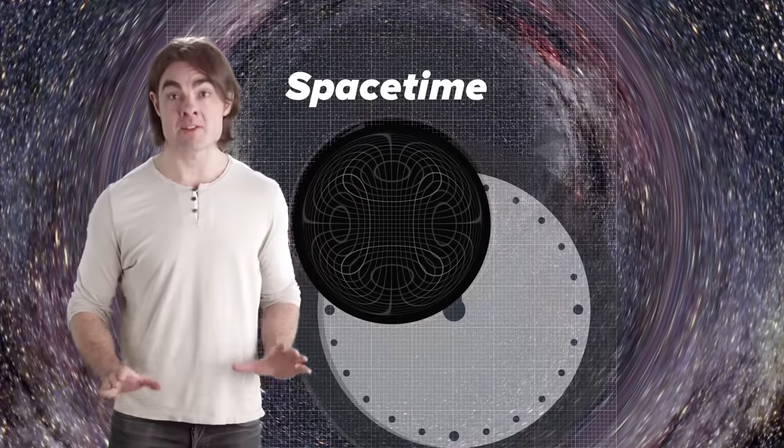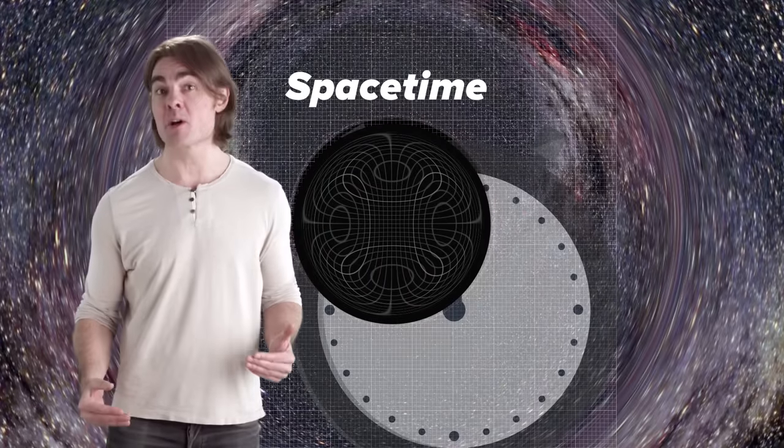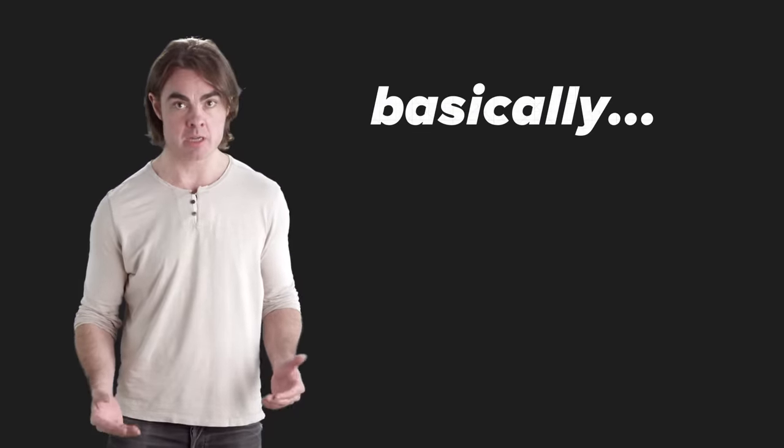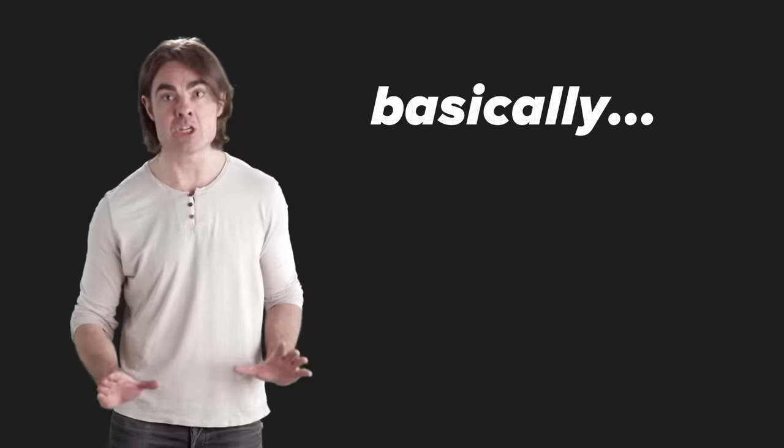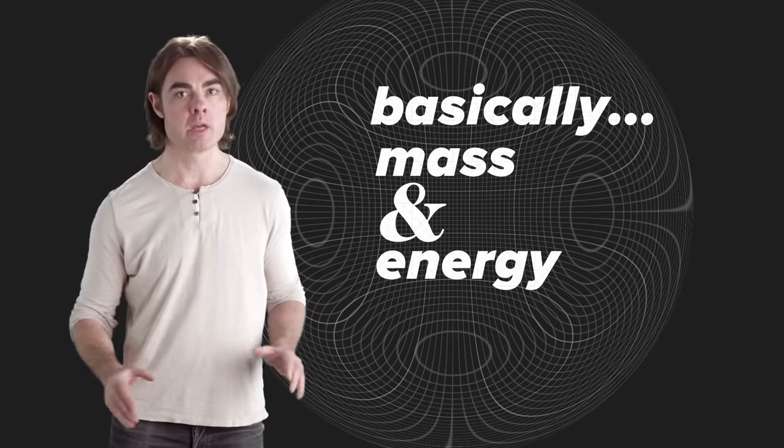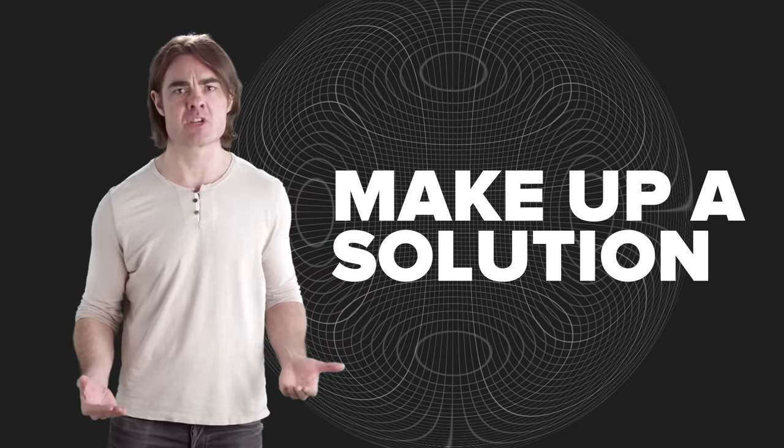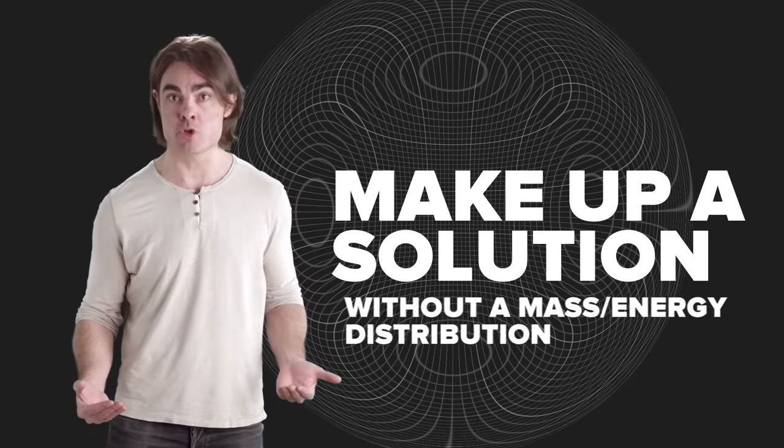The spacetime around and within a black hole is predicted by solving Einstein's field equations around a point of extreme positive energy density. Basically, mass and energy tell us how space should warp. But if you're cheeky, you can actually just make up a solution to the equations of GR without starting with a real mass energy distribution.